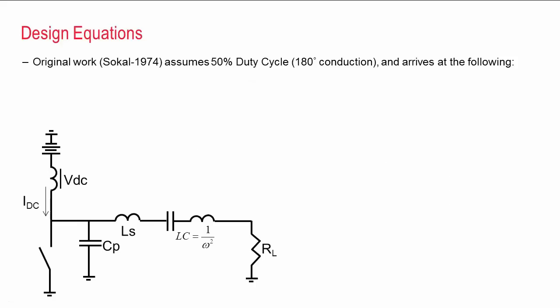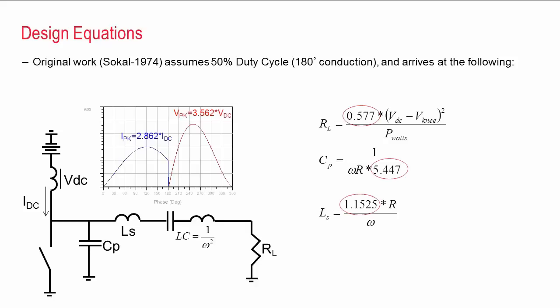Something that I think designers realize pretty quickly when they start working on a class E circuit is that the equations are not all that easy to find. The original work assumed a 50% duty cycle and used that simplification to derive equations with some seemingly random factors in them. And even this simplified analysis showed that the voltage and current swings tend to be very high multiples of the bias.